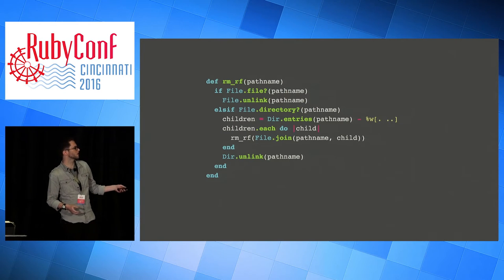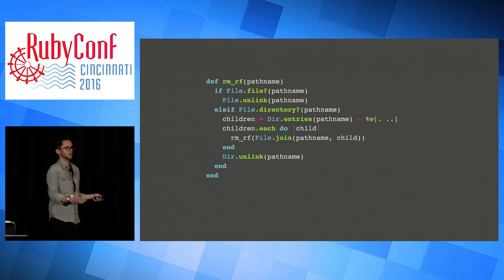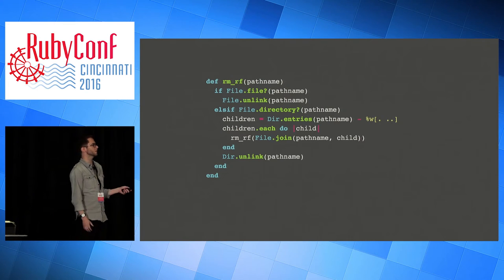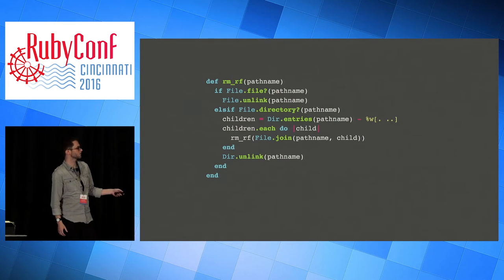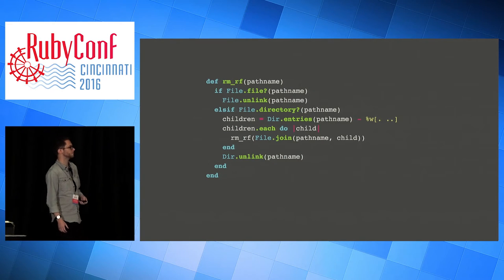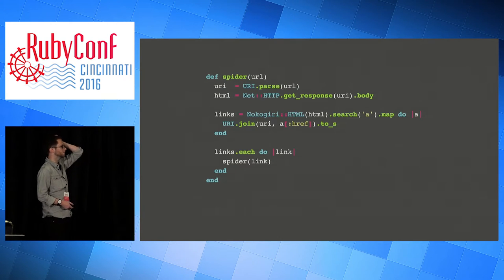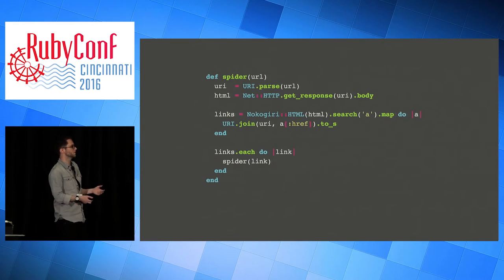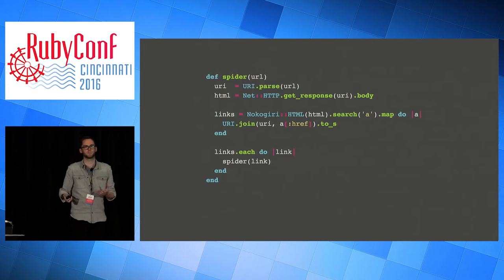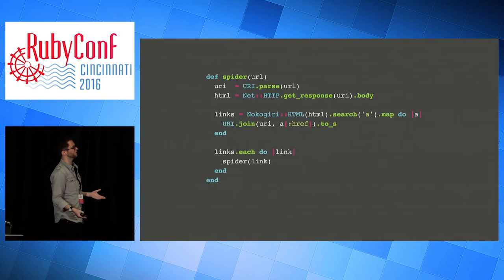If you start with a file, then you just delete the file. Otherwise, if it's a directory, you have to delete everything inside it first because you can't delete a non-empty one. So you have to look up the children in the directory and then delete each of those recursively, and then you can delete the directory. Likewise, if you want to spider a website or the whole internet, you start with a URL and you parse it and go look up the page at that URL. Then you find all of the links in it, and for each link you find, you just do the same thing again - you spider the link. You do that recursively and you will end up reading the whole internet if you run this properly.